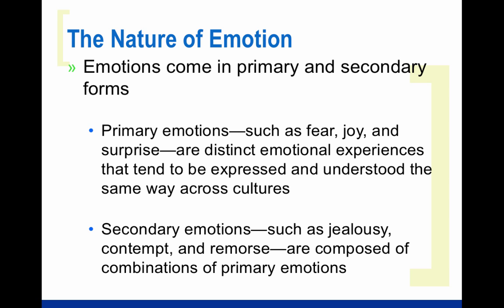There are also secondary emotions — combinations of other emotions. Jealousy, for instance, is an emotion that is a combination of fear, sadness, and anger. Think about it: when you're jealous of another person because you think they are going to take your friend or lover away from you, there is fear, there is anger, and there is sadness. So secondary emotions are composed of combinations of those six primary emotions.